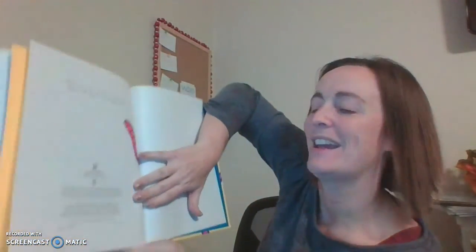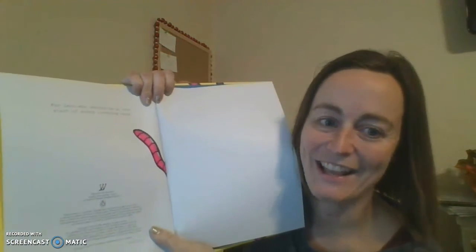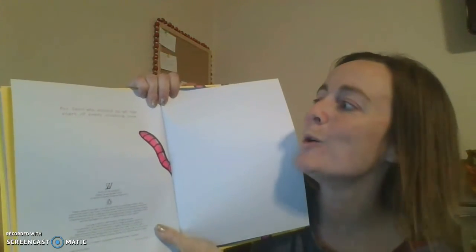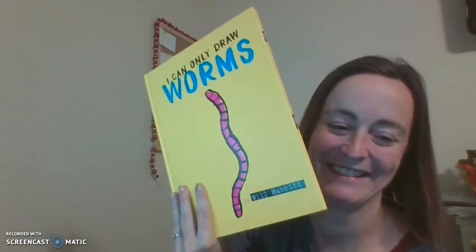This was a book about worms. I can only draw worms. And this is my favorite page, which I think it says, for zero, who should be at the start of every counting book. See ya! Bye. Thank you.